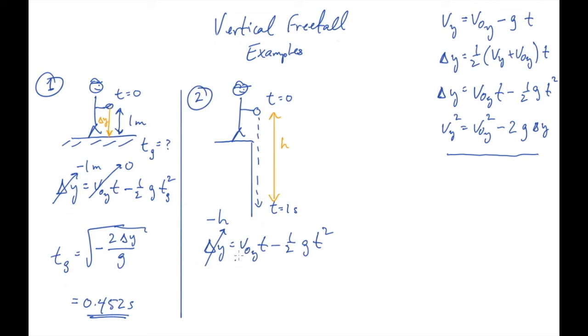We again drop it from rest, so that is zero. This term is gone. And t is one second. So we can cancel the minus signs and just calculate the distance that it falls. H is one half g times t squared, one second squared. And that works out to 4.9 meters.